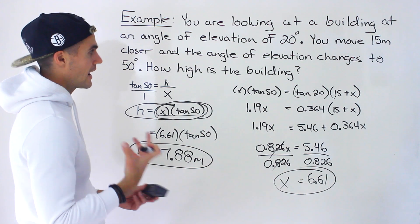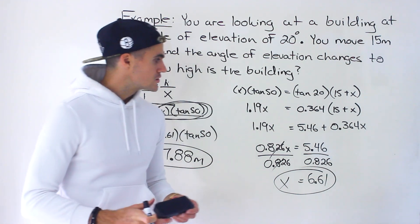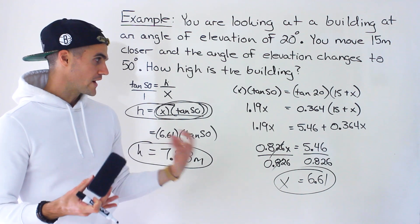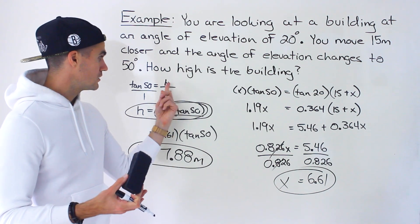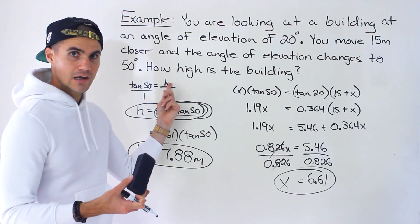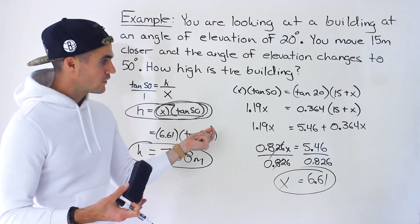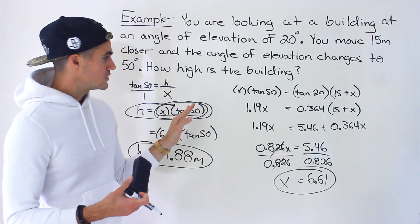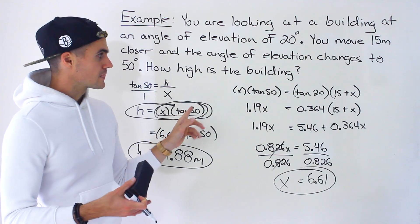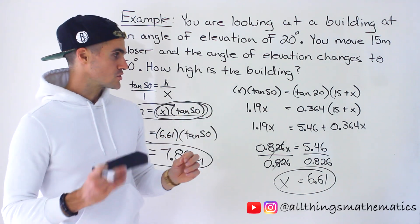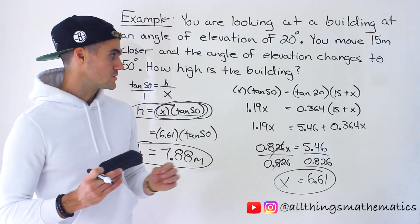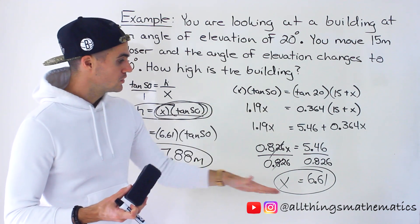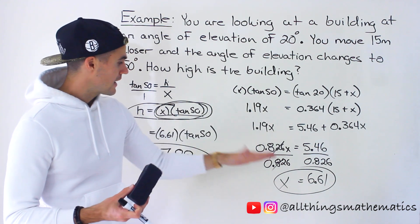To summarize: we split the diagram into two right angle triangles that both share side H. I introduced a new variable X for the missing base segment, created two equations using tangent ratios, then used substitution by setting the two expressions for H equal to each other. I solved for X first, then plugged it back in to get the final height H.